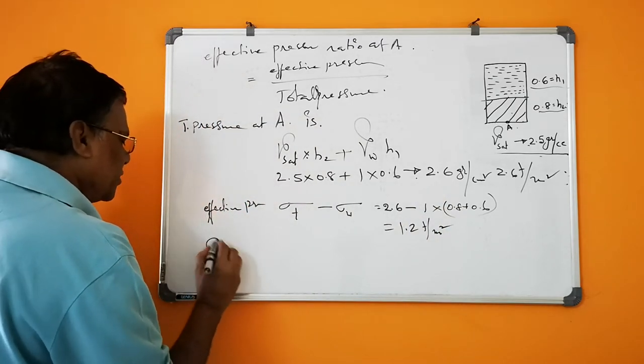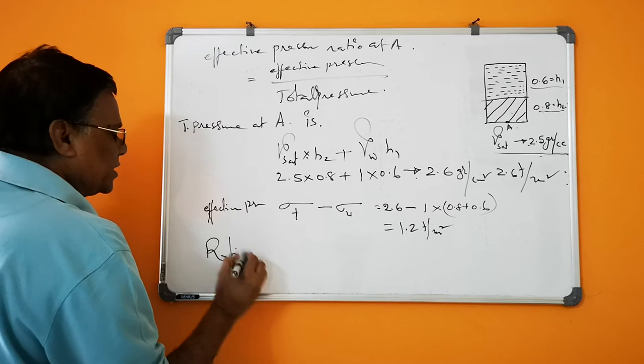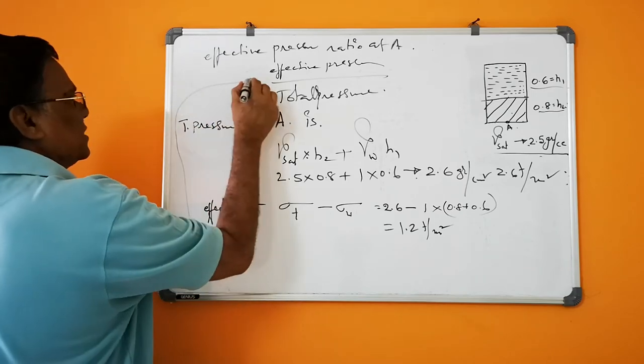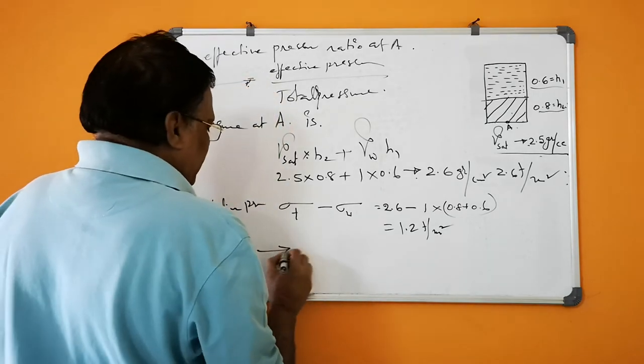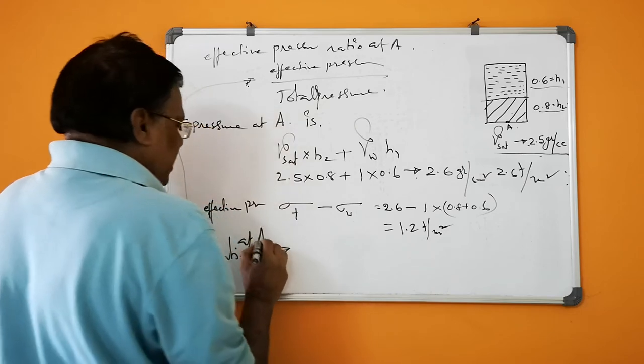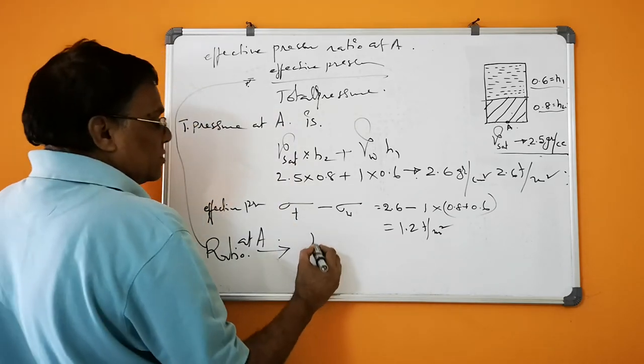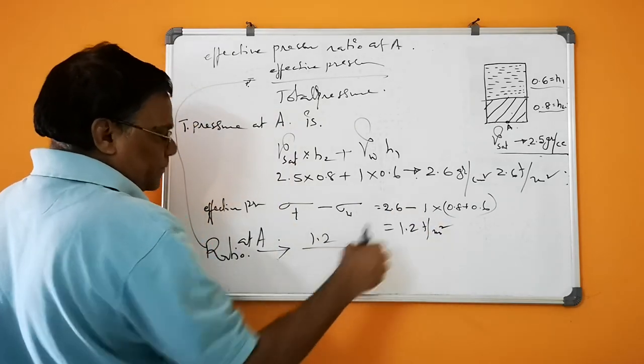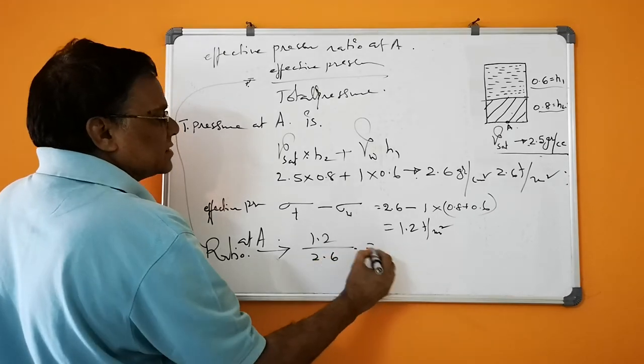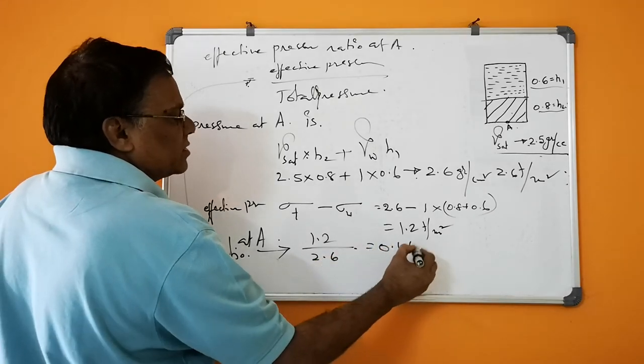So the ratio, as defined at A, is 1.2 divided by 2.6, which equals 0.461.